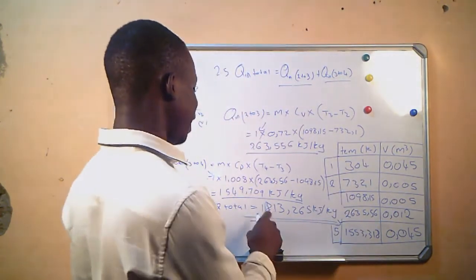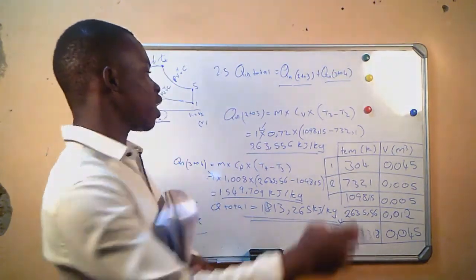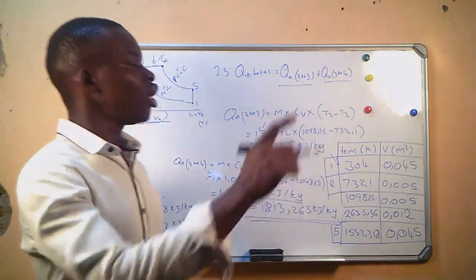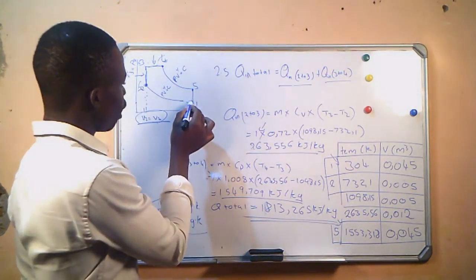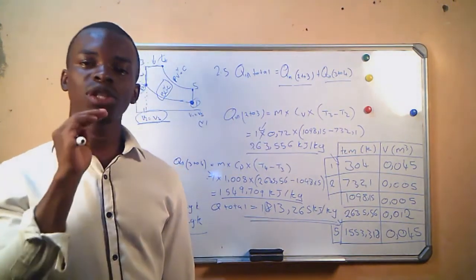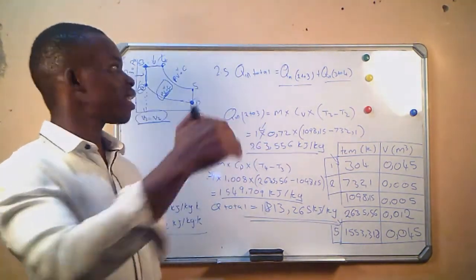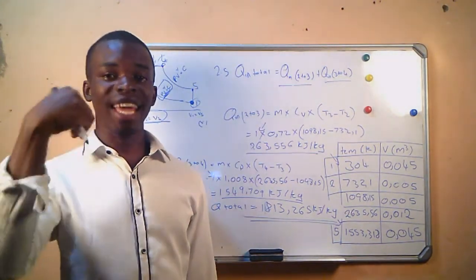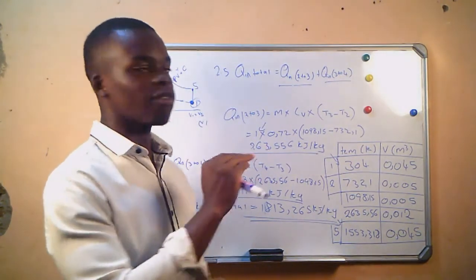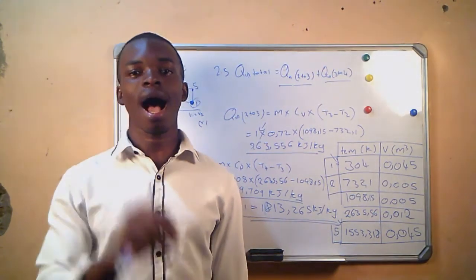Remember: the way you choose a formula depends on the process you are dealing with. If you are looking for information between points 1 and 2, use the adiabatic law formulas. If you are dealing with 3 to 4, use the constant pressure formulas. As long as you have the information needed to use a formula, use it to find what you are looking for. It is not always one standard formula — look at what you have, what you want, and choose the formula that works. See you in the next lesson.